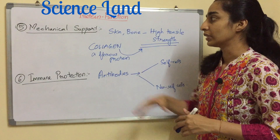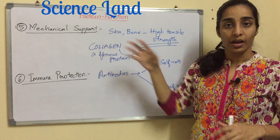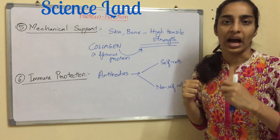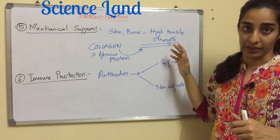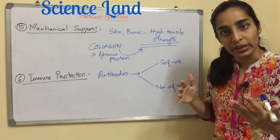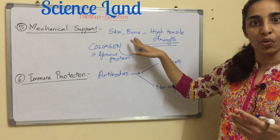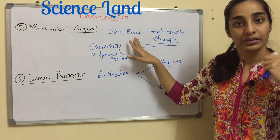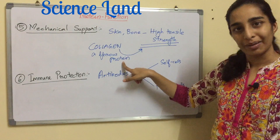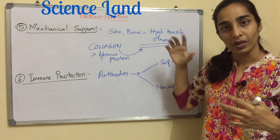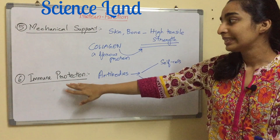The fifth function is mechanical support. Bone and skin are very rigid and have high tensile strength. There is a protein which provides the skin and bone with that strength — the protein is collagen. Collagen is a fibrous protein, and certain proteins like it provide mechanical support.